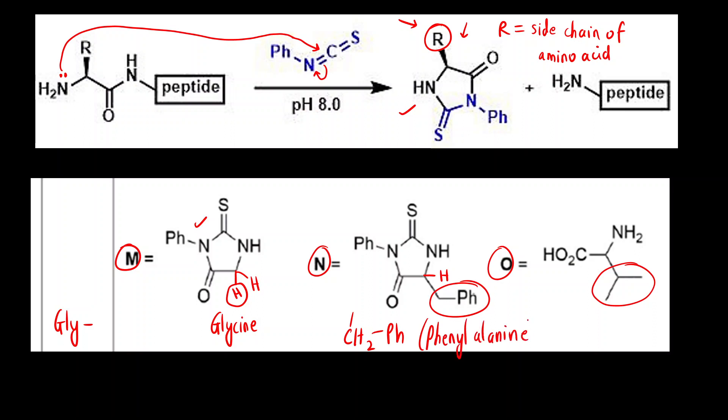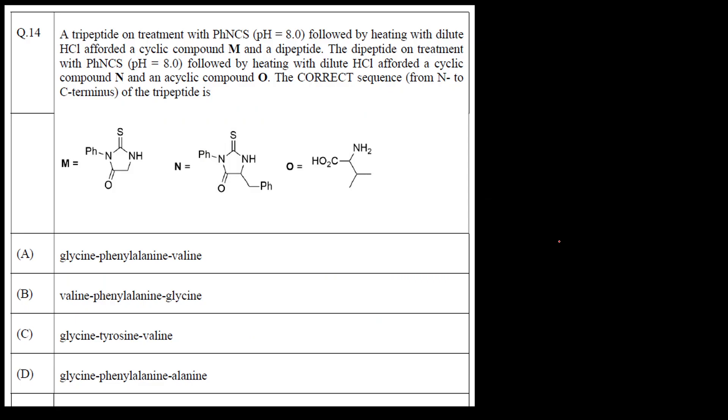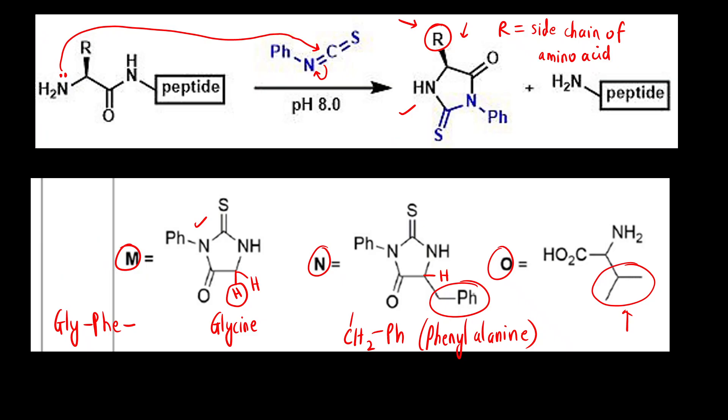So the second amino acid is phenylalanine and this R group you can see, this is the group for valine. Isopropyl group is present in which amino acid? In valine. The three letter word is VAL.